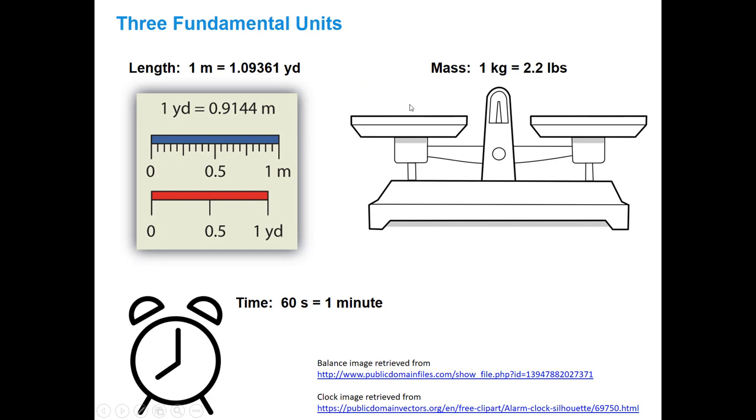Here are just a few pictorial representations relating a meter to yards. You can see that a yard is not quite a whole meter, so 0.9144 meters is the conversion there. For mass, a kilogram is about 2.2 pounds. And for time, we all know that there's 60 seconds in a minute.